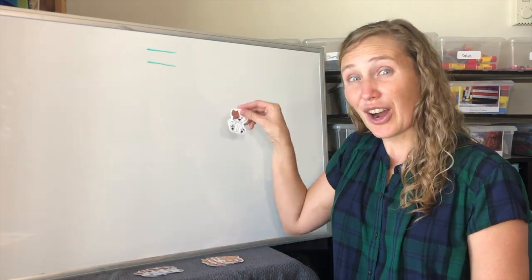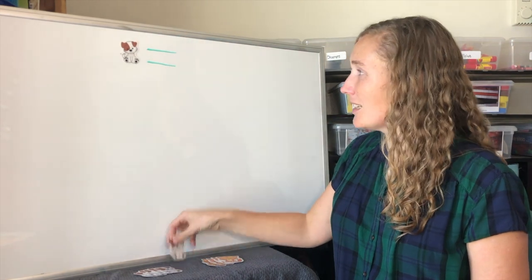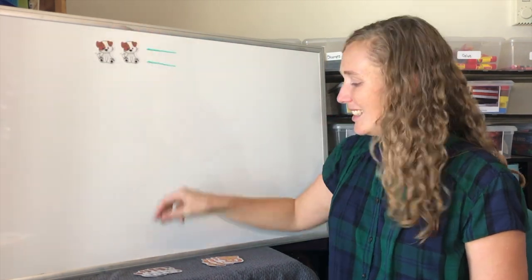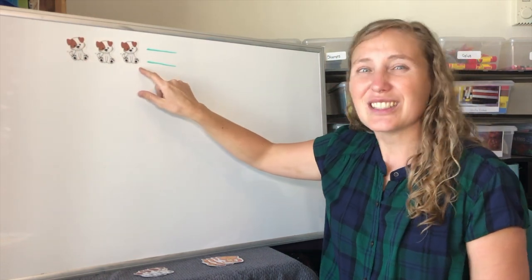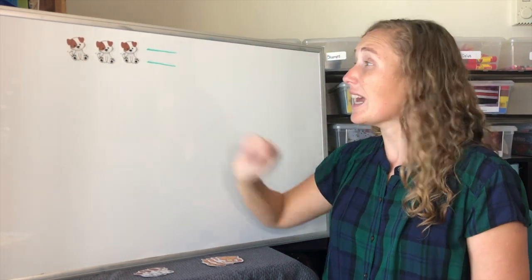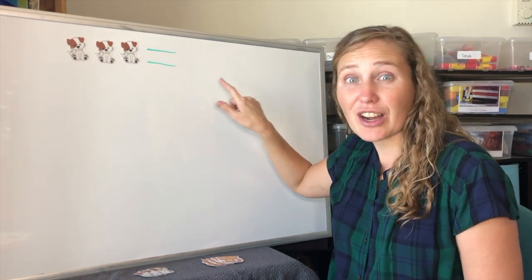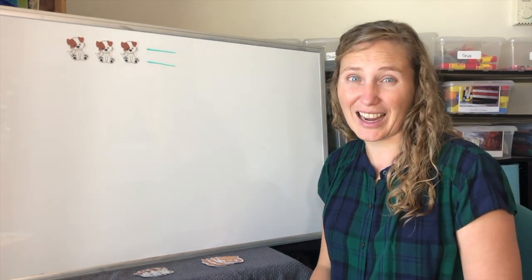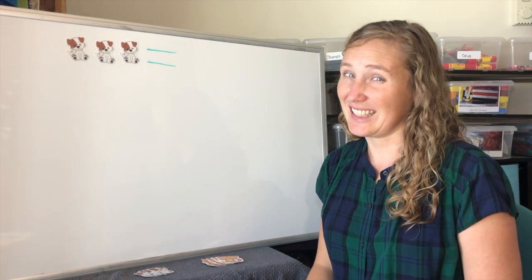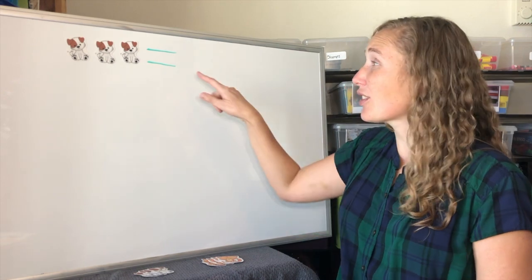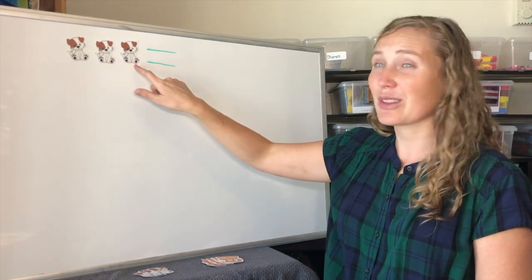We'll start with our dogs. One, two, three. Three dogs. If we have three dogs on this side, how many dogs do we need on the other side to make them equal? Yes, we'll need three on this side as well. One, two, three dogs.